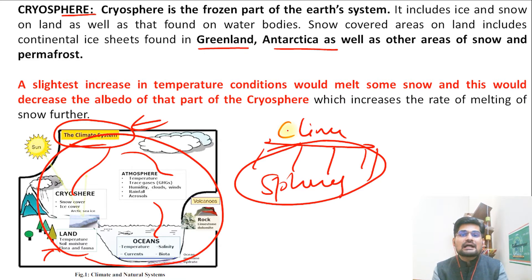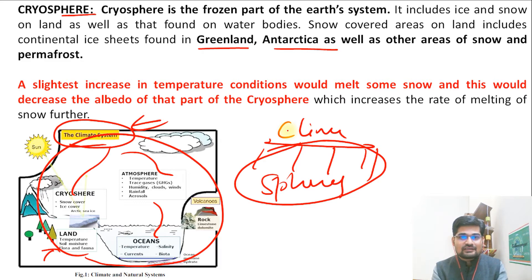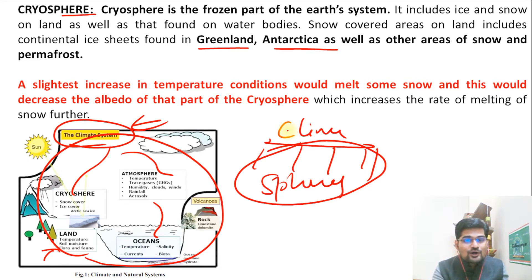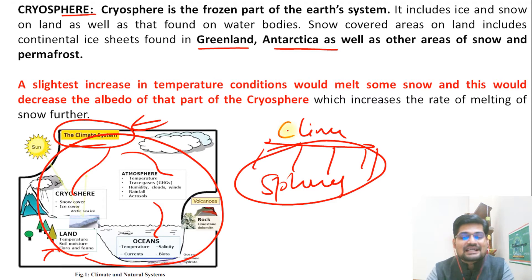That is the whole idea behind the nature and scope of climatology. Climatology's nature is actually integrative and interdisciplinary, and its scope is that it provides knowledge and information to resolve problems of social, economic, and environmental nature across all the spheres — all the realms that we know.